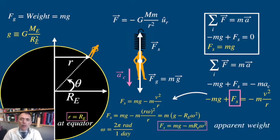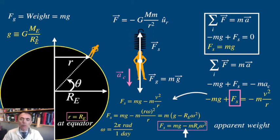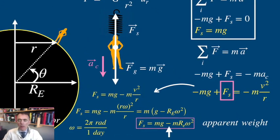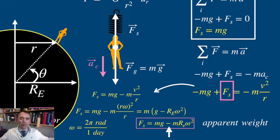This equation tells us that the weight that the spring indicates is actually smaller than your actual weight — I'm sorry to be the bearer of such news. So the net force that we experience is less than our weight. The equation also indicates that the faster the Earth spins, the smaller the apparent weight will be. There will be an angular velocity, an omega, for which the apparent weight will be zero. For spins faster than that, we would be ejected from the Earth, or whatever planet we are trying to visit.